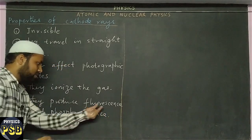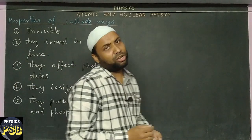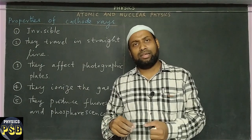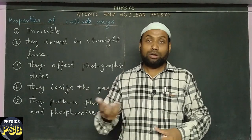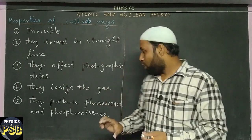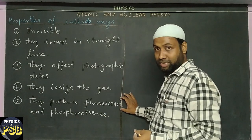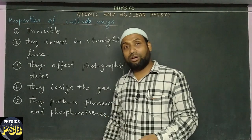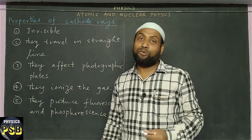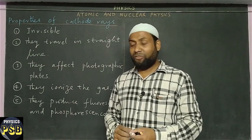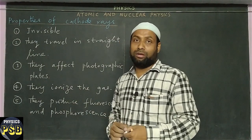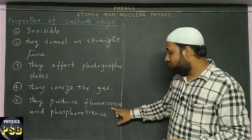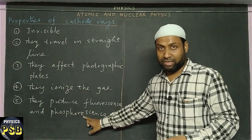Fluorescence is when radiation falls on a substance and the substance emits out light. Phosphorescence means the emission of light from an object even when the radiation is removed from it — we can simply say delayed fluorescence is known as phosphorescence.